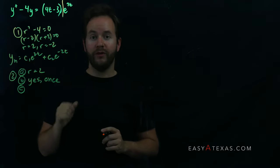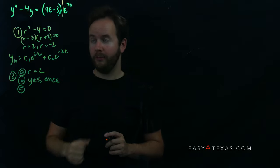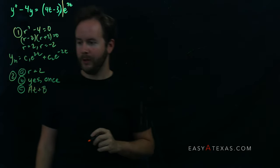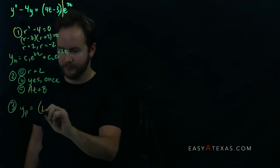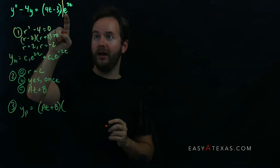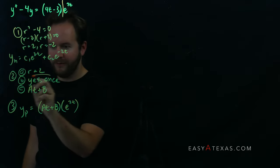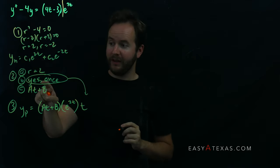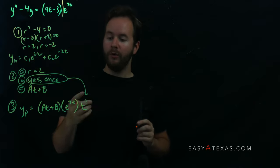Part c: we have a first-degree polynomial 4t, so the general first-degree polynomial is at + b. Step 3: set up yp = (at + b)·e^(2t). However, because the answer to part b was 'yes, once,' we need to tack on an extra factor of t. If it had matched twice, we would put t². Multiplying t into the polynomial gives yp = (at² + bt)·e^(2t).